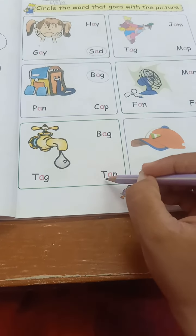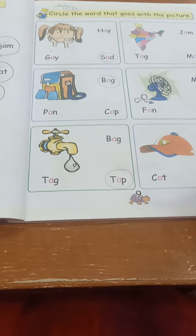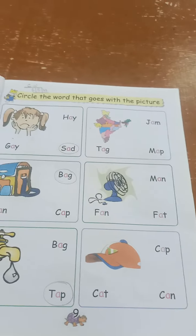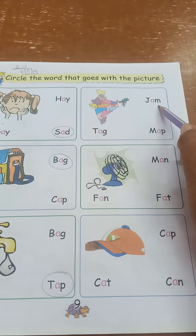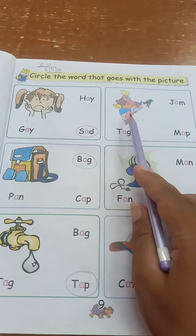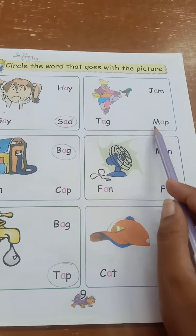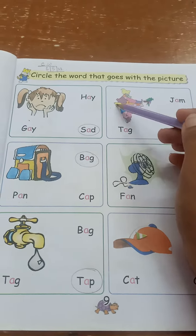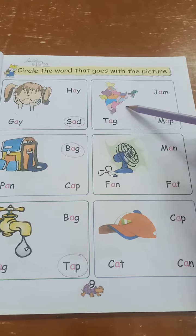Now the third picture — this is a very good picture. We need to save this right now. What is coming out? This is water coming out. We have to look at the picture, identify it, and circle the correct word. Now let's look at the options: B-A-G — bag. Does it look like a bag? No, it doesn't. The second one is T-A-G — tag. Does it have any tag on it? No. What is the next one? T-A-P — tap. Yes! This is called a tap from where water comes out. The spelling of tap is T-A-P — tap. So we need to circle the word tap. Please circle the word tap with a pencil.